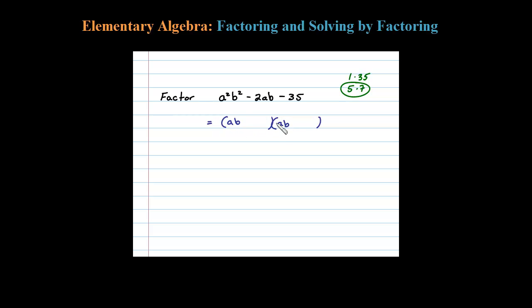35 factors as 5 times 7. Okay, so that gives me my middle term here: 5aB, 7aB. 5aB and 7aB adds up to negative 2aB if the 7 is negative and the 5 is positive.